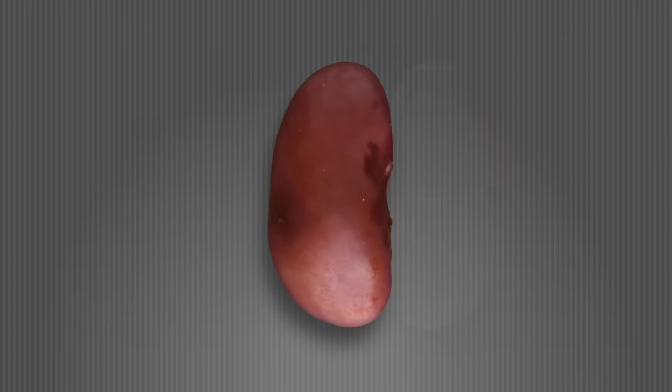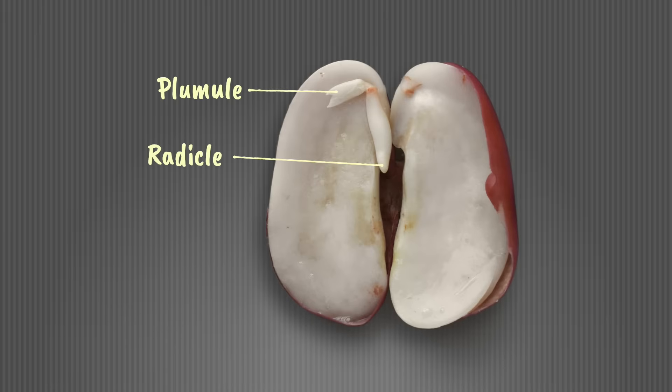If we look at the cross-section of this seed you can see the plumule, radical, two cotyledons and a seed coat around the outside.